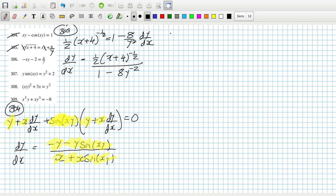306. Minus y minus x dy/dx equals 1/7, so dy/dx equals (1/7 plus y) over minus x.